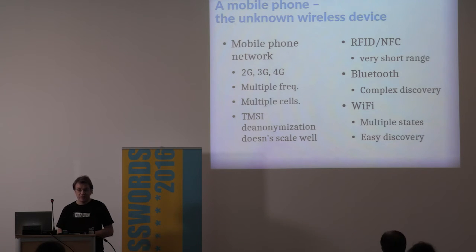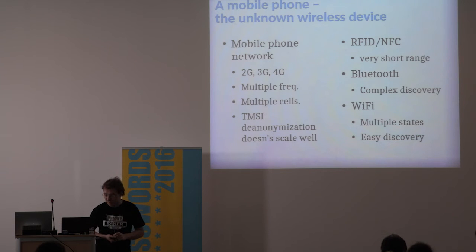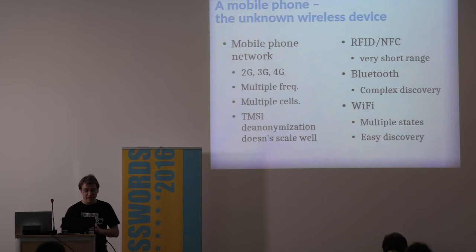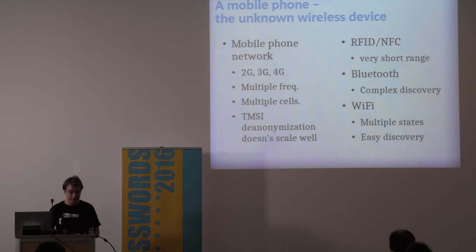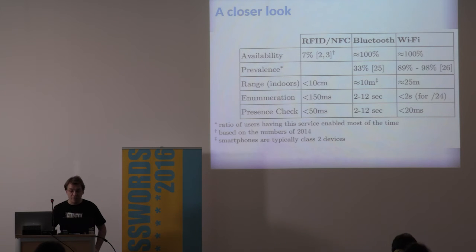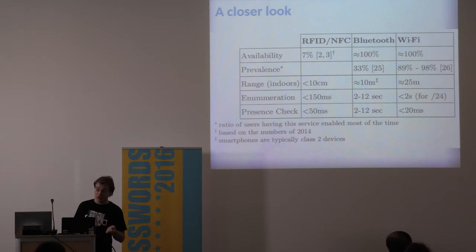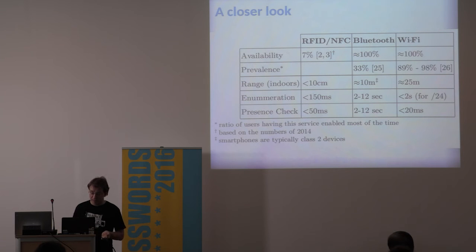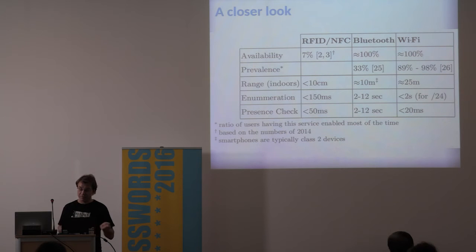There's Bluetooth, which has quite a complex discovery protocol. And there's Wi-Fi, which also has multiple states to care about, but a fairly easy discovery mechanism to see if a device is in the vicinity or not. In the paper we compared the different methods across four main dimensions: availability (how many devices supported), prevalence (how many devices usually have this transmitting function enabled), range, and how fast you can enumerate or do a presence check.